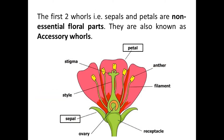The outer two whorls are sepals and petals. See in this diagram the green leaves — these are known as sepals. Above these green leaves are the colored leaves. In some flowers these colored leaves are pink, in some orange, purple, red, or violet. These colored leaves and green leaves — sepals and petals — are known as the non-essential floral parts; they are also known as the accessory whorls.